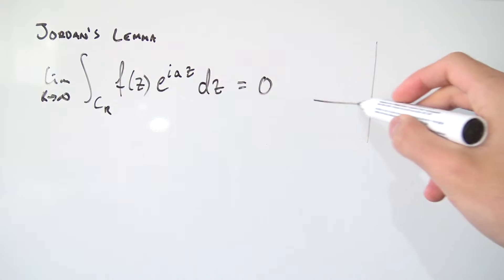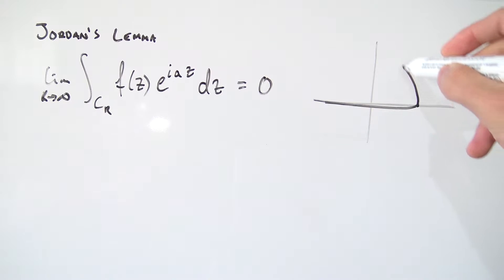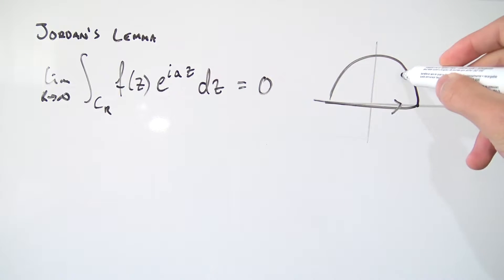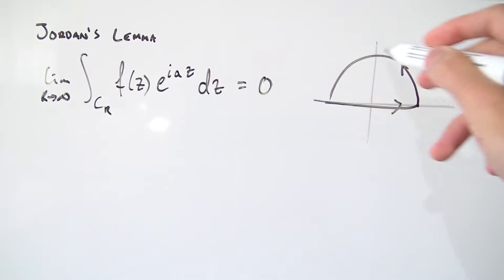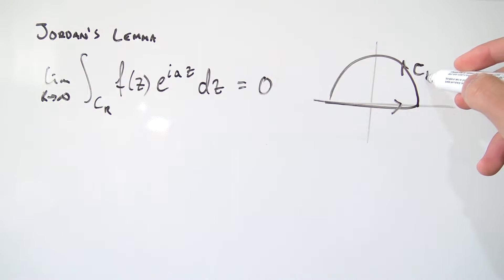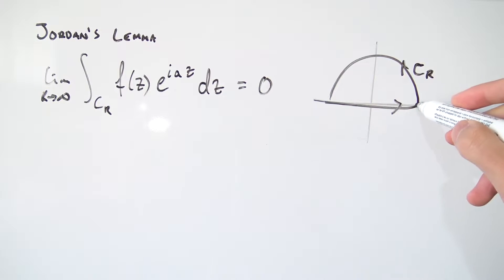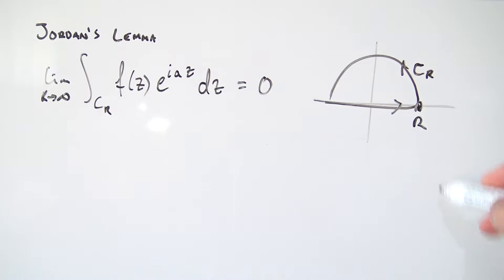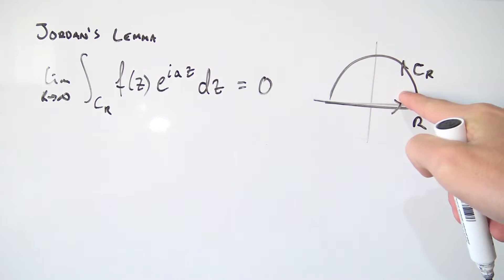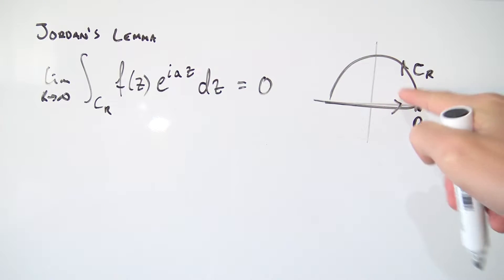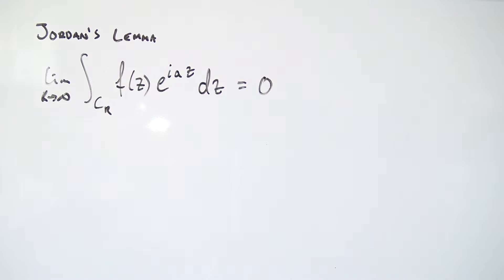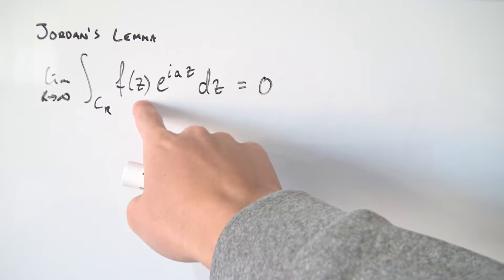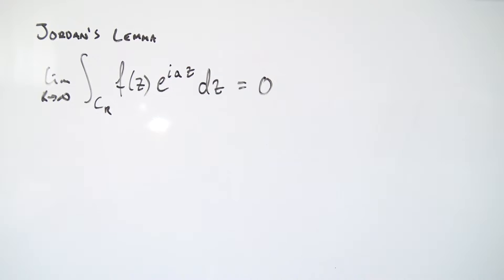Let's say we took some kind of semicircular contour to integrate across — something like that — and this upper arc is some kind of C_r. If we integrate along this arc, where our semicircle has a radius of r, and take the limit as r approaches infinity, the value of this arc actually does not contribute anything to our contour.